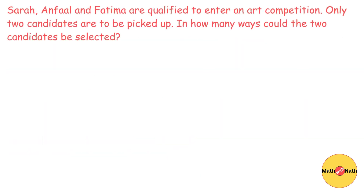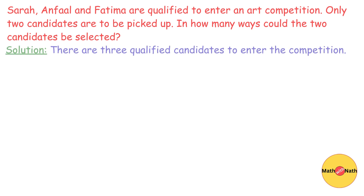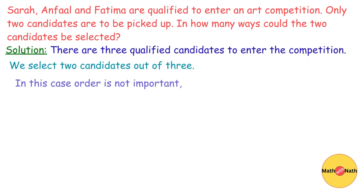Let us do one more problem. Sarah, Anfall, and Fatima are qualified to enter an art competition, and only two candidates are to be picked. In how many ways could the two candidates be selected? There are three qualified candidates and we select two; since order is not important, we use the combination formula.